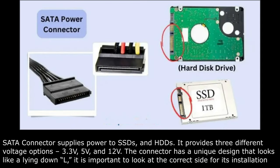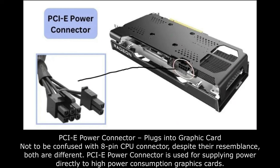The SATA connector supplies power to SSDs and HDDs. It provides 3 different voltage options: 3.3 volts, 5 volts, and 12 volts. The connector has a unique design and it is important to look at the correct side for installation. The PCIe power connector plugs into the graphic card. Not to be confused with the 8 pin CPU connector despite their resemblance — both are different. The PCIe power connector is used for supplying power directly to high power consumption graphics cards.